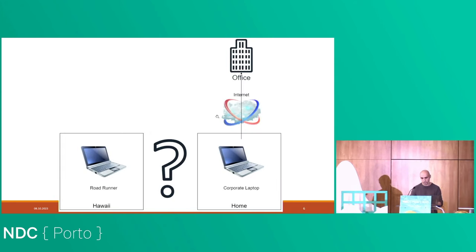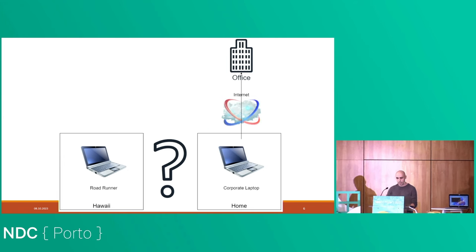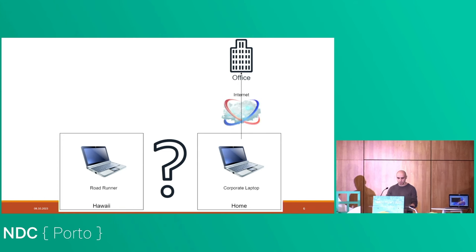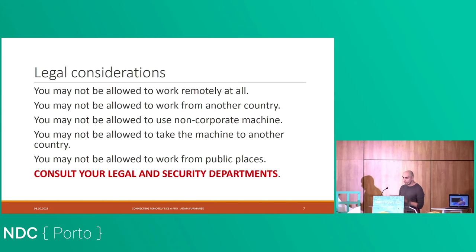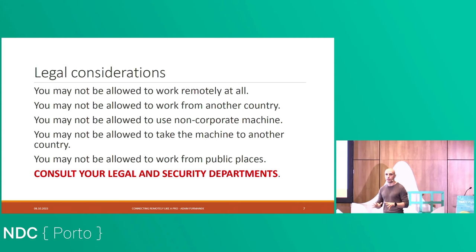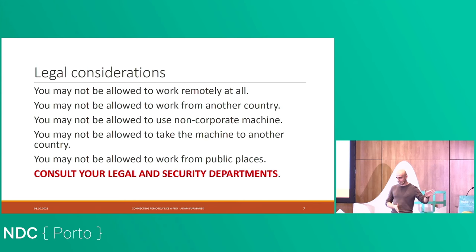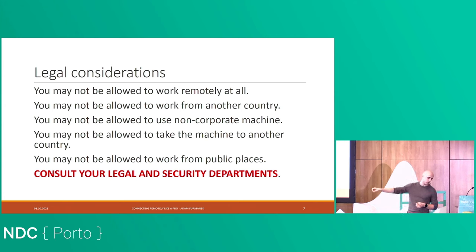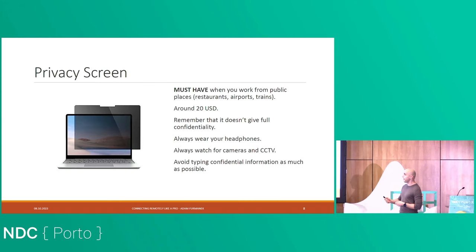Our corporate laptop sits at home, it can connect to our office network via VPN — Cisco AnyConnect, WireGuard, whatever else you have. And we have our Roadrunner with us in Hawaii. Before moving on, I want to stress a few things. I'm not going to circumvent any legal policies here or break the law. It's up to you whether you can work from Hawaii legally, deal with visas, or take your laptop across borders. I'm showing the technical solutions — please consult your legal and IT departments.